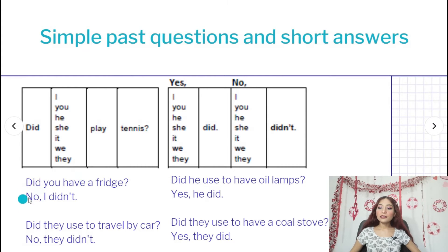Okay, didn't is the same as saying no I did not, but didn't is most common because it's shorter. Or for example, a positive sentence or a positive answer would say, okay, did he use to have oil lamps? Yes, he did. Or for example, did they use to travel by car? No, they didn't.